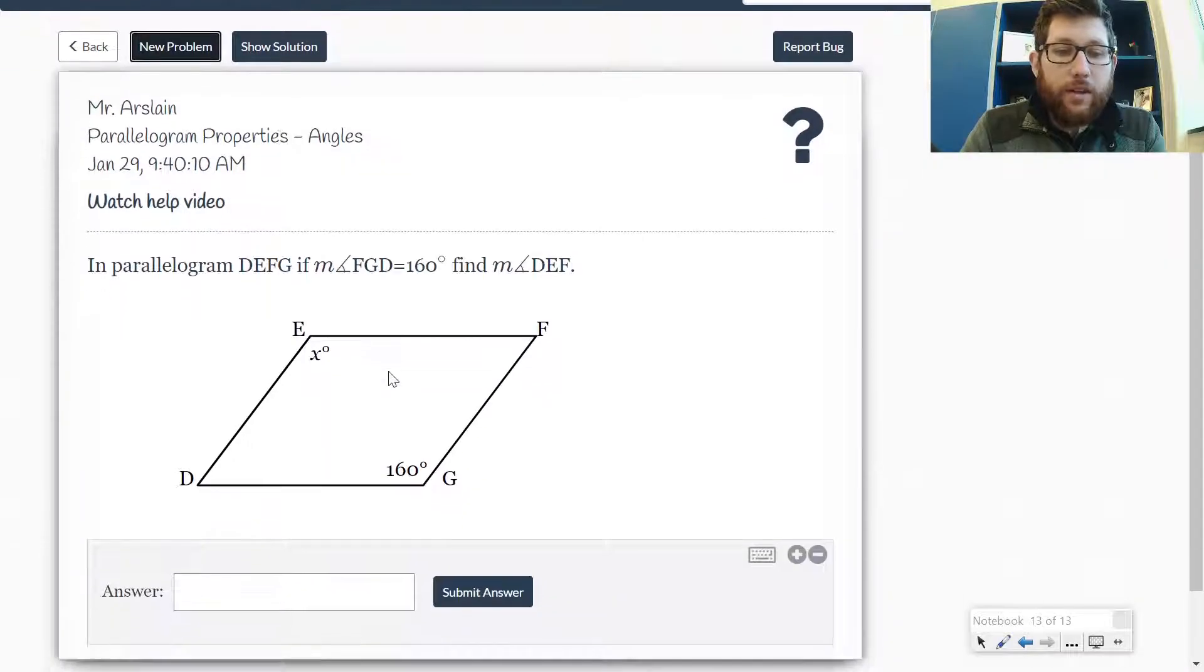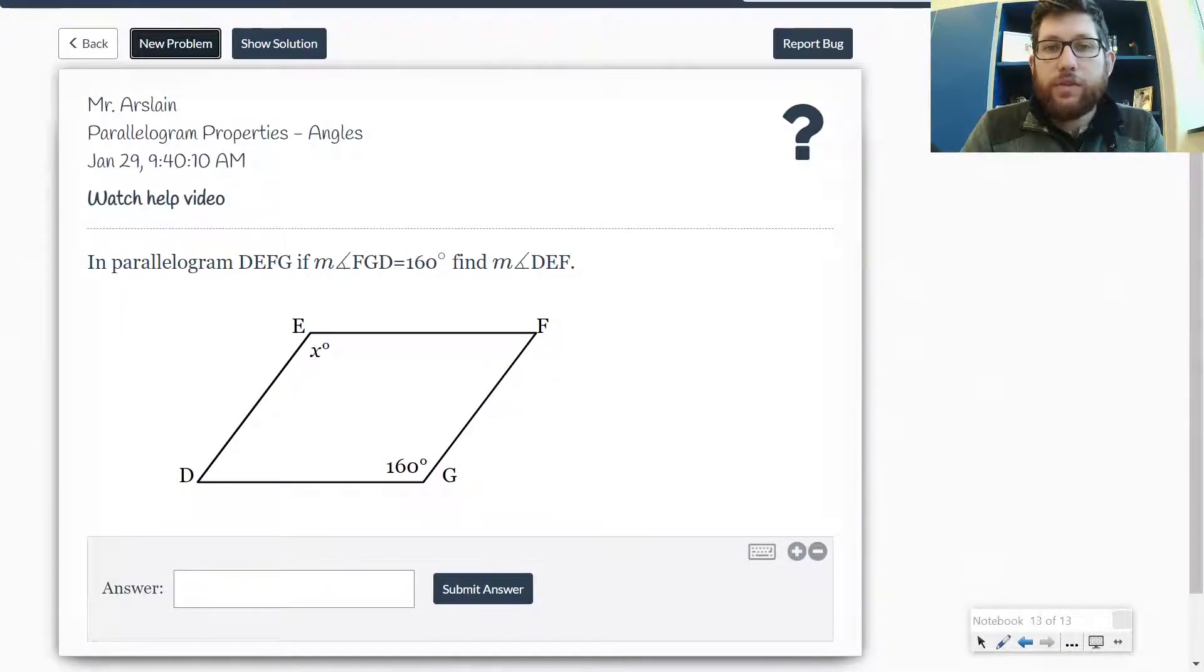If the angles are opposite each other like this, they would be equal. If they're next to each other, they add up to 180. It's that simple here to start off with parallelograms. So hopefully this is helpful. But this wraps up our review on the parallelogram properties here in DeltaMath.